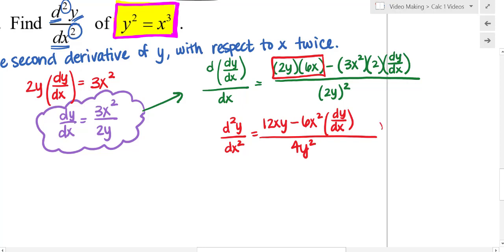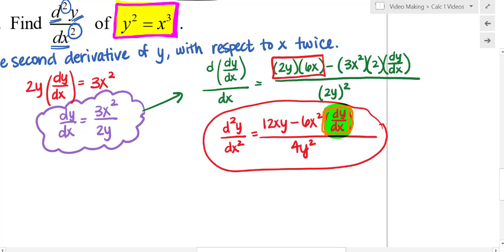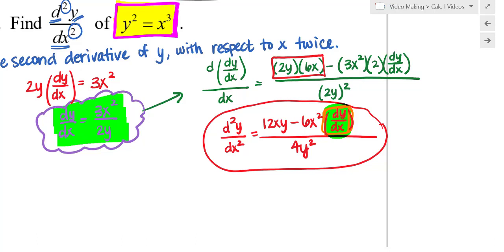This would be a valid answer, but notice that to evaluate it you need not just a point (x, y) but also the value of the derivative — it's recursive, like needing the 99th term to find the 100th. Instead, let's substitute the known expression for dy/dx. We already found dy/dx equals 3x squared over 2y, so let's plug that in.